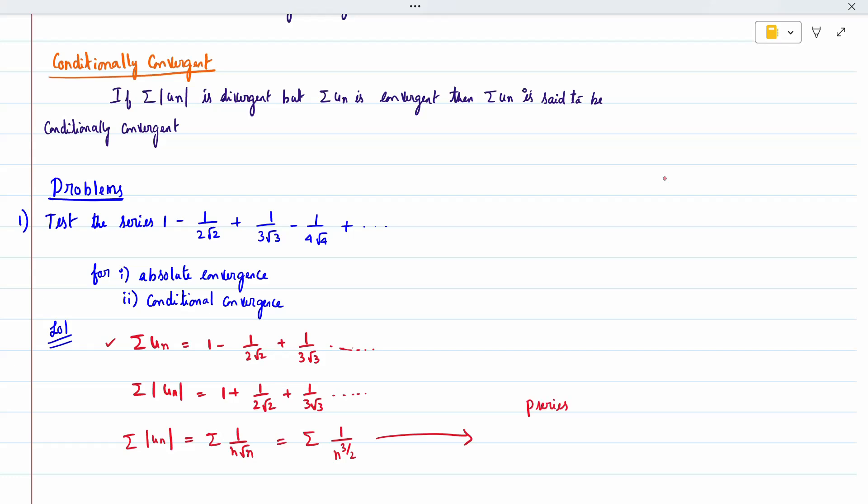The p-series formula states that sum of 1/n^p converges when p > 1. You can check my video on series topics for the p-series formulas. When p is greater than 1, the series is convergent.